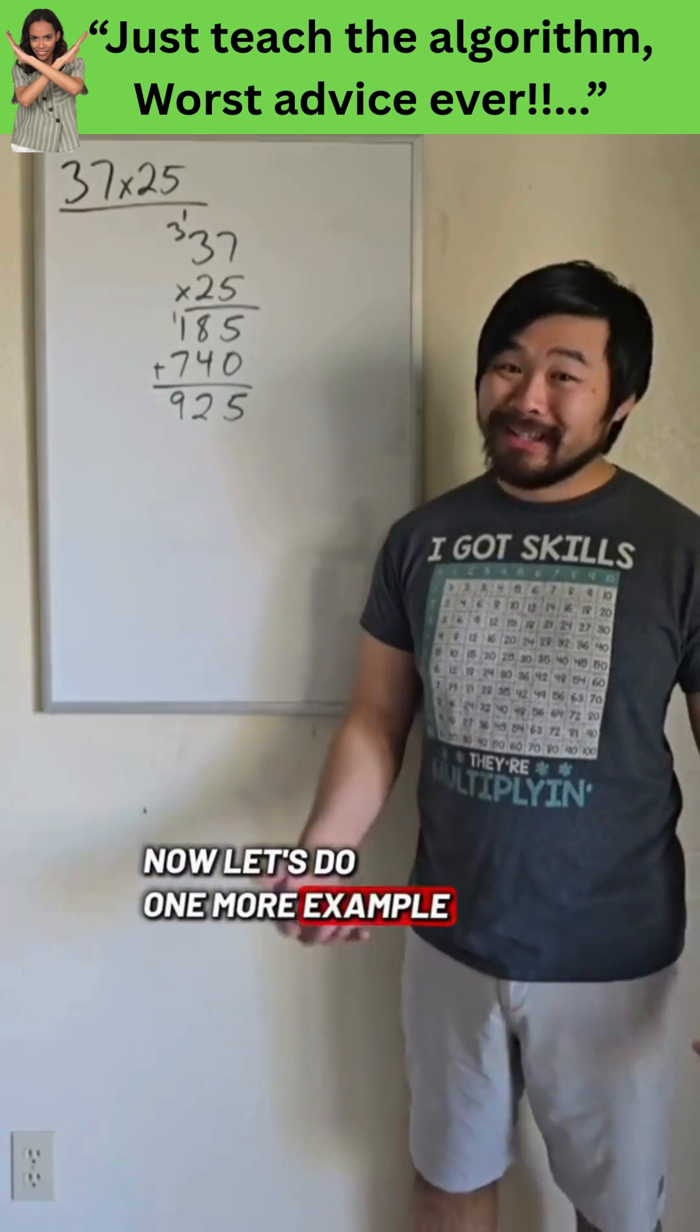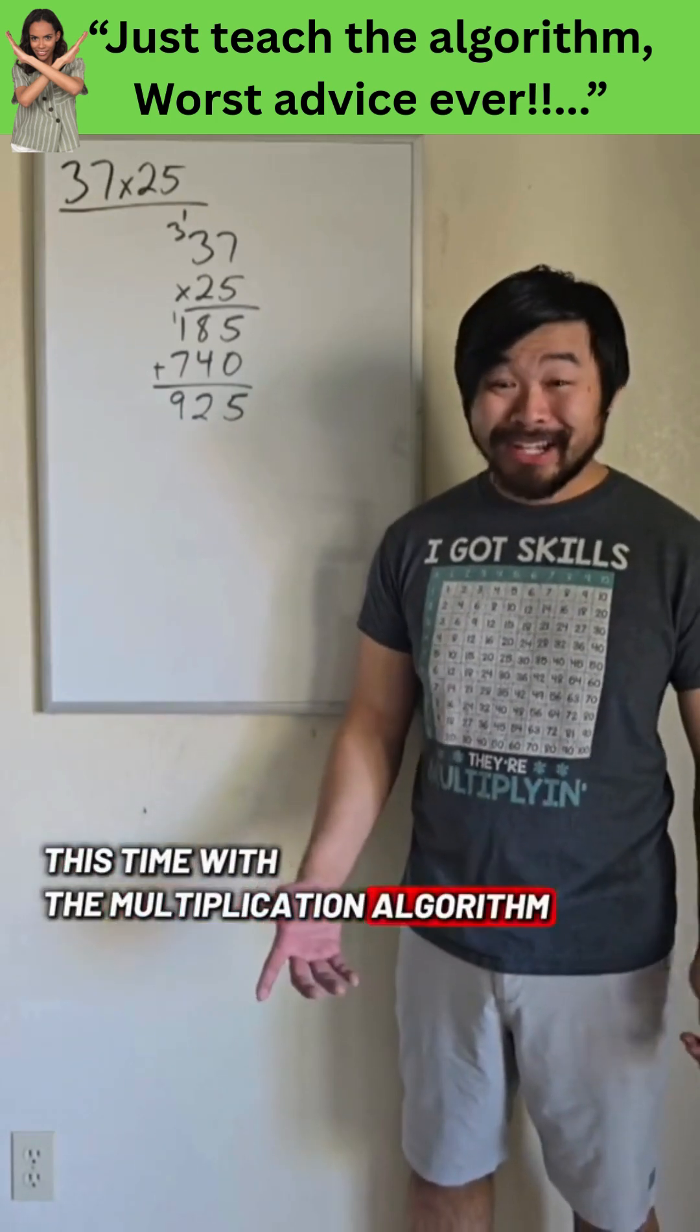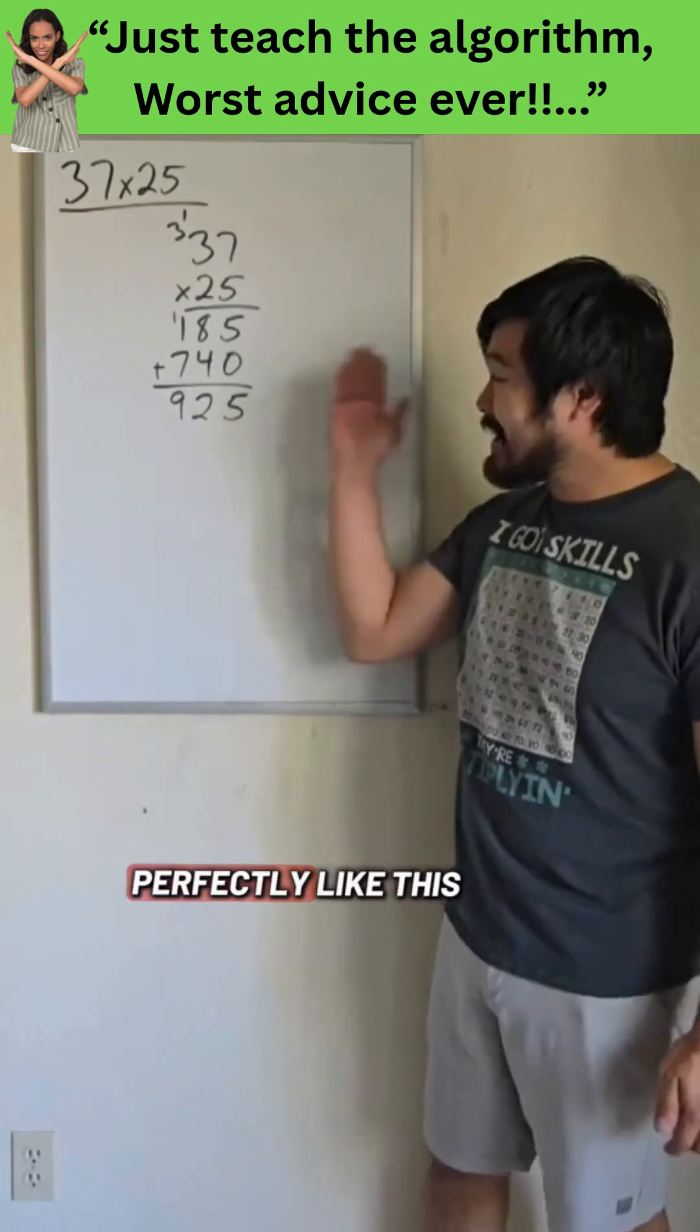Now, let's do one more example, this time with the multiplication algorithm. Say a student did 37 times 25 perfectly, like this. Now, afterward...